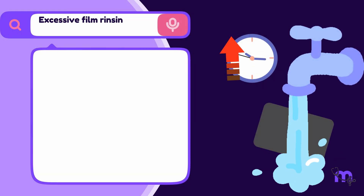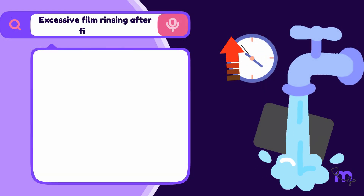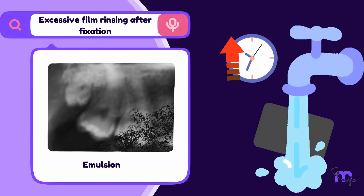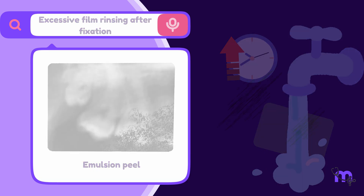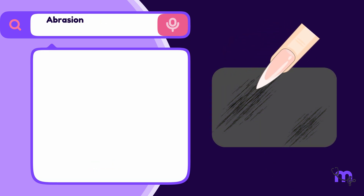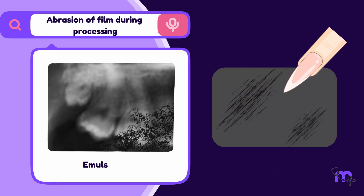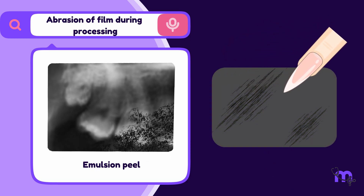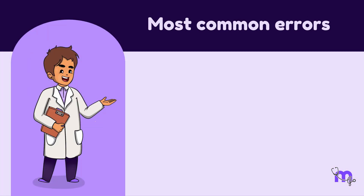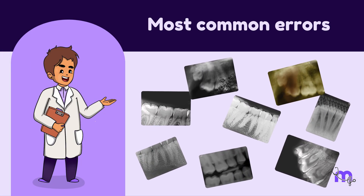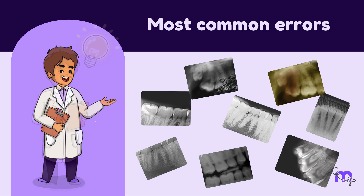Excessive rinsing of the radiograph can lead to another error called emulsion peel. Additionally, abrasion of the film during processing can also cause emulsion peel. These are the most common errors that can lead to faulty images in practice. By understanding these mistakes, you can minimize them and achieve optimal radiographs.